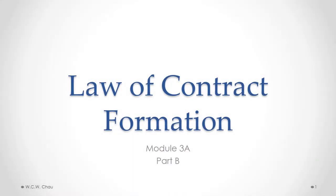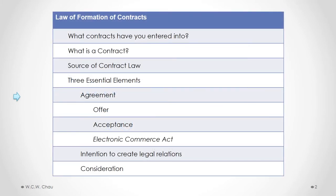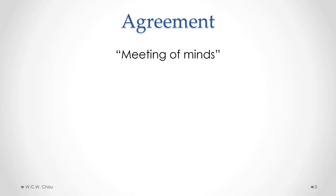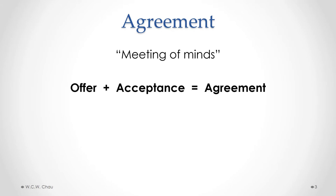This is Waylon Chow, and welcome to the Law of Contract Formation, Module 3A Part B. In this module we will look at what is an agreement, and then look at what is an offer and the various rules regarding offers. To have an agreement we must have what is called a meeting of minds, where one party makes an offer to another person, and that other person accepts all of the terms of that offer, resulting in what we call an agreement.